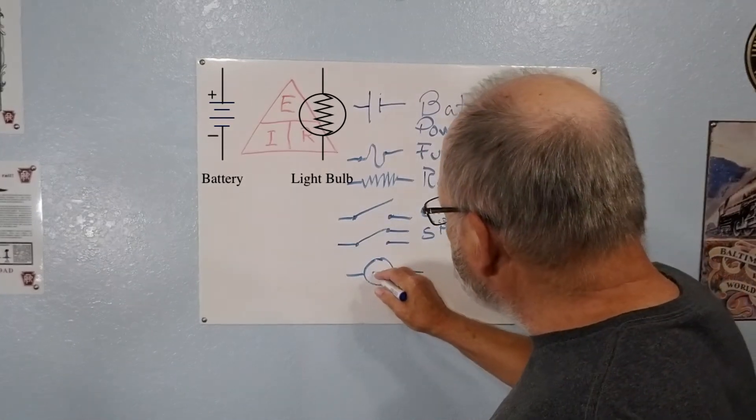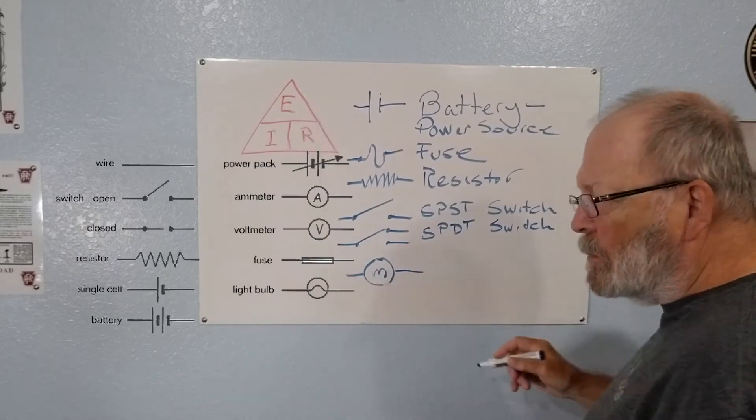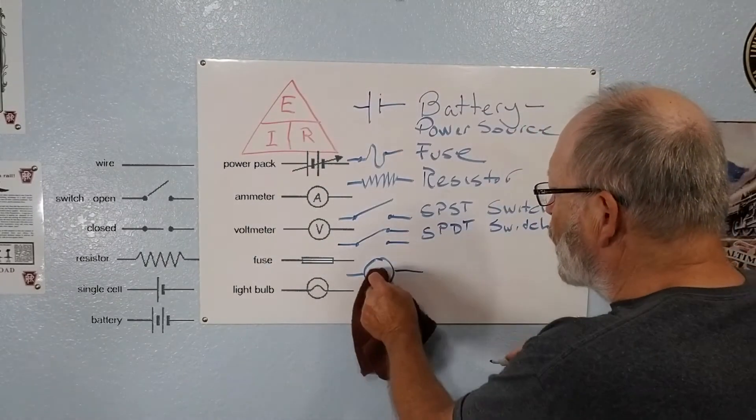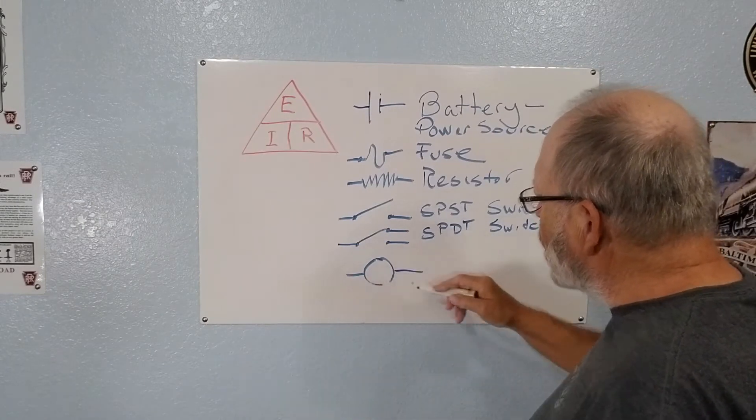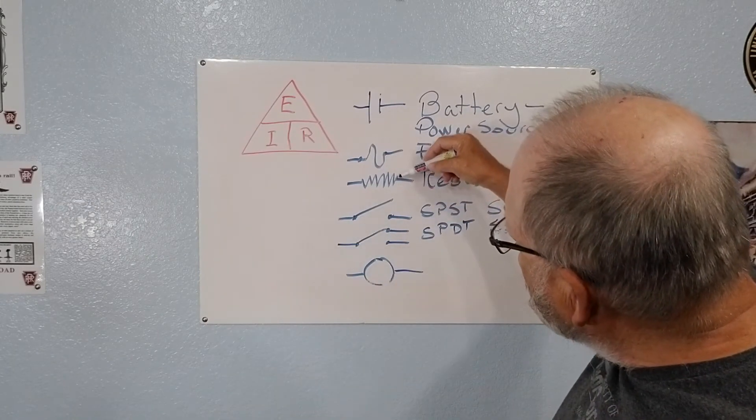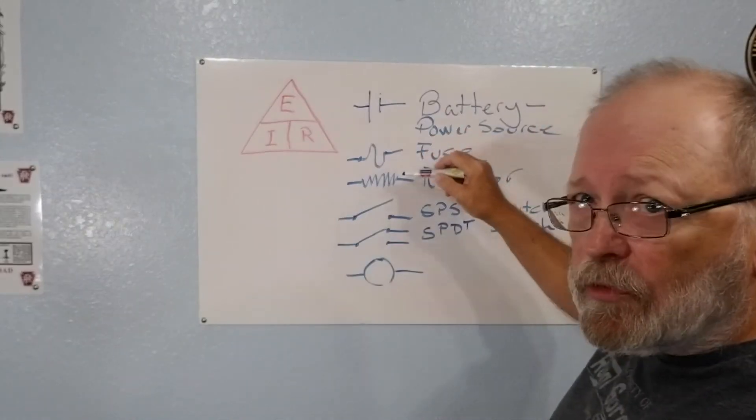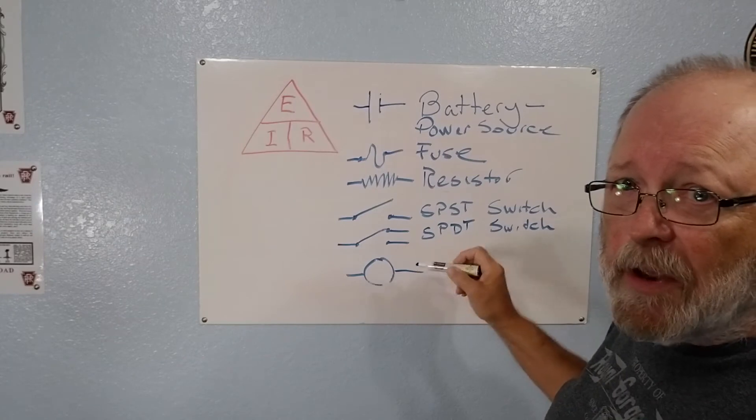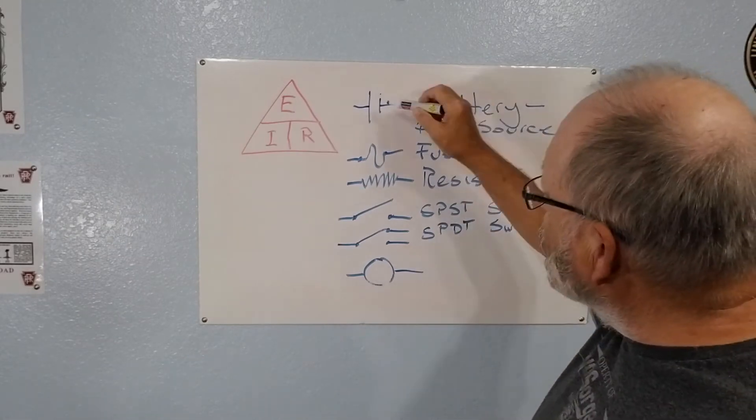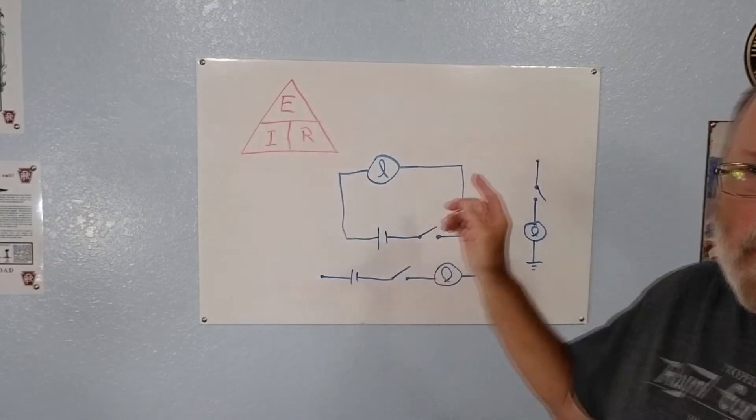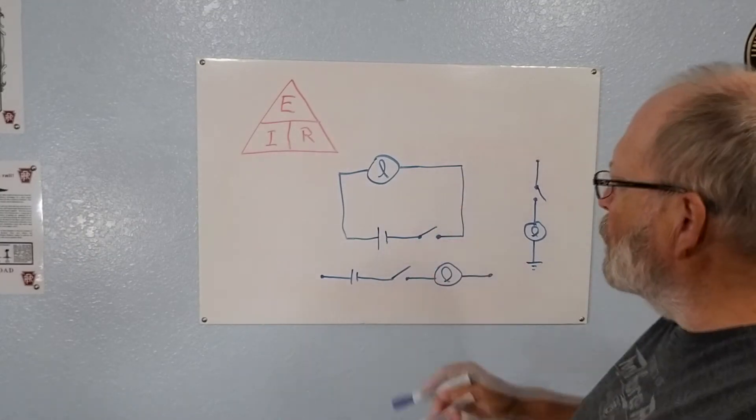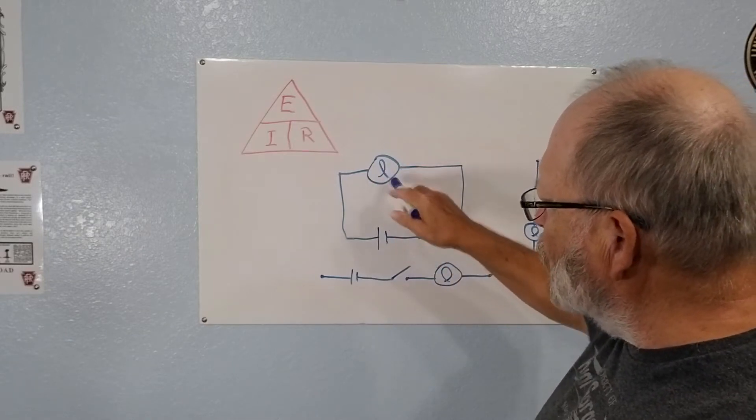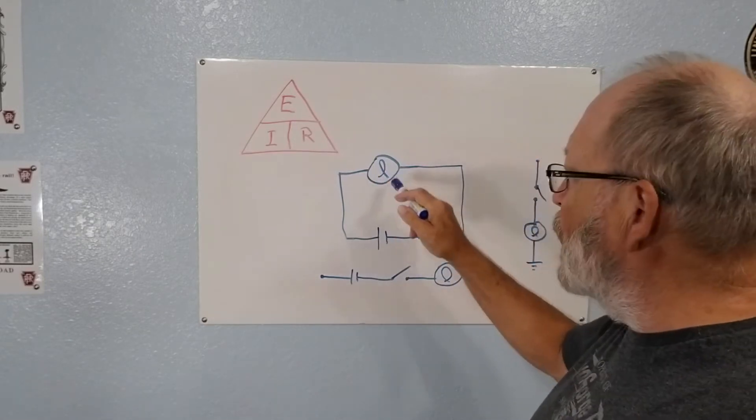Now comes the fun part. If you want light bulbs or something like that, anytime you have anything it might be shown as a circle, it could be a light bulb, it could be a motor and they'll usually identify it with a letter inside of it of what it is and it's the same thing as resistance or a resistor because that's going to be something in the circuit that you're going to be dissipating the power from your battery or your power source.